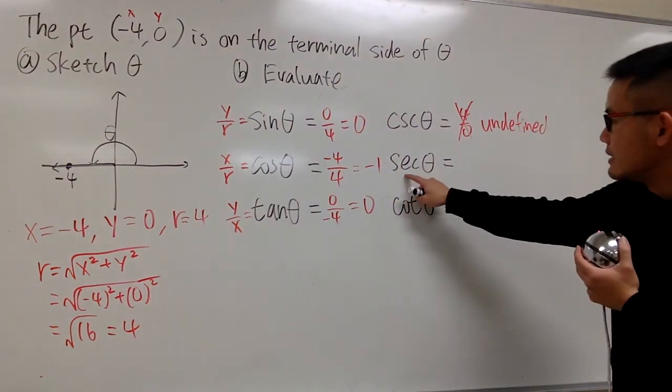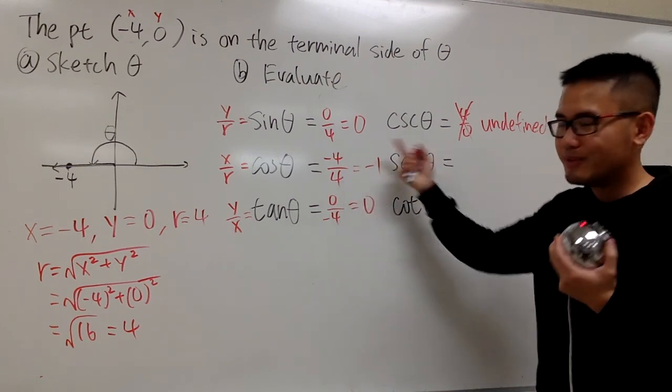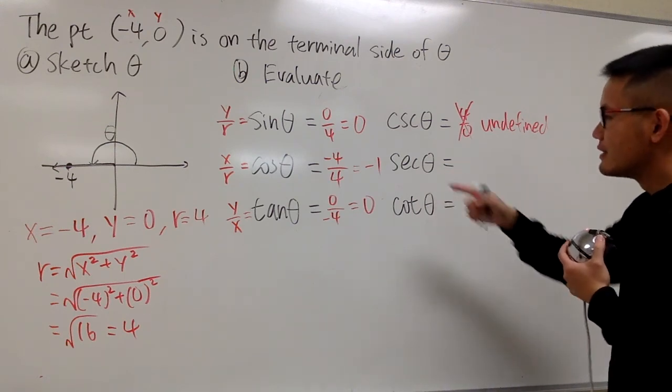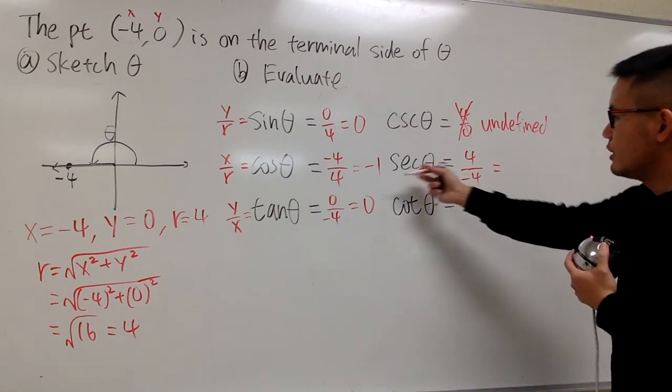All right. Secant θ, it will be 4 over -4, because it's r over x for secant θ, right? So, this is 4 over -4, you still end up with -1.